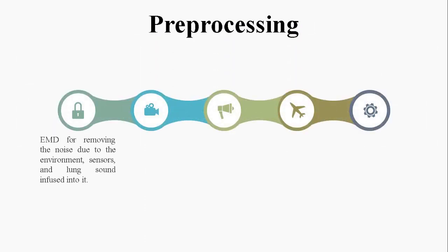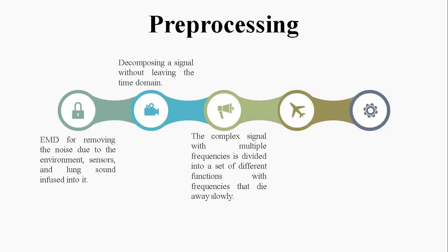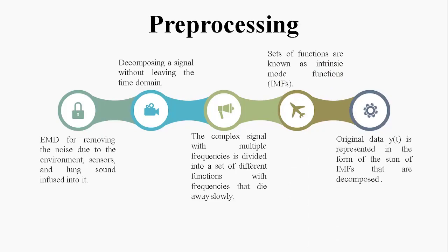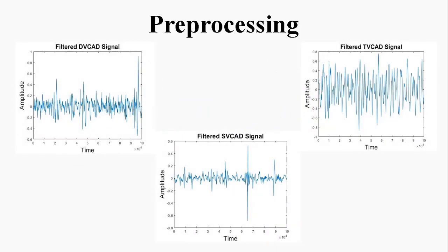For pre-processing, we used Empirical Mode Decomposition (EMD) for removing noise due to the environment, sensor, and lung sounds. EMD decomposes a signal without leaving the time domain. The complex signal with multiple frequencies is divided into a set of different functions with frequencies that die away slowly, known as Intrinsic Mode Functions (IMFs). The original data is represented as a sum of decomposed IMFs. Here we have the pre-processed signal for each CAD class.